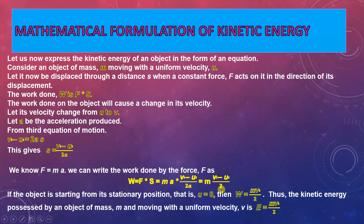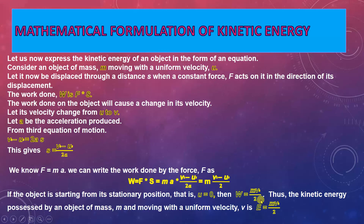This gives the work done when an object's velocity changes from u to v. If the object starts from rest, u = 0, so work done = mv² / 2 = ½mv². This is the kinetic energy formula: KE = ½mv². The general form, W = ½m(v² − u²), is called the work-energy theorem.